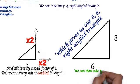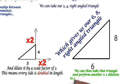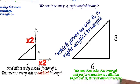We can then take that triangle and perform another times two dilation to get our twelve, sixteen right-angled triangle.